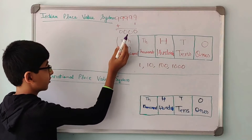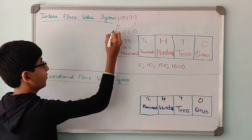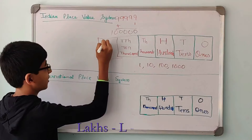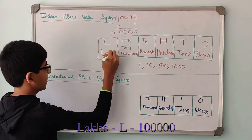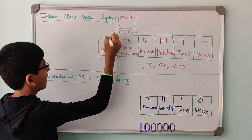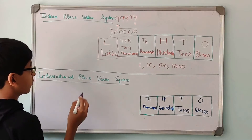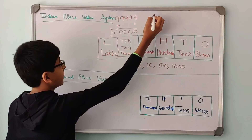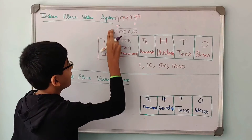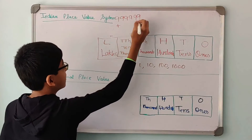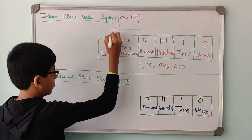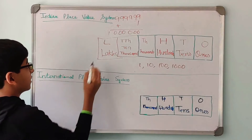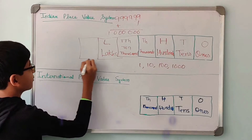99,999 plus 1 is 1 followed by 5 zeros, and this is called a Lac. In short, it is written as L and it is called Lac. So this is the Lacs place. Lacs is a very important number — don't forget it! The biggest number in Lacs is 9,99,999. When we add 1 to that, we get 1 followed by 6 zeros, and this number is called 10 Lacs.